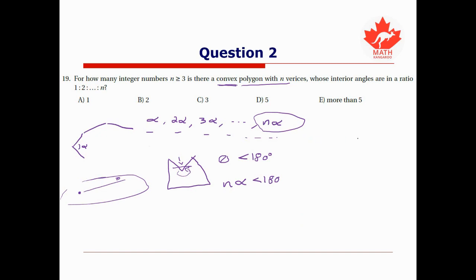We also know that the sum of the angles of any polygon with n vertices must be (n - 2) multiplied by 180 degrees. So that means if we add up all our angles, we go α + 2α + dot dot dot + nα, and we add them all together, that has to be equal to (n - 2) times 180 degrees. So let's see if we can combine this result with this other piece of information we have to determine the possibilities for n.